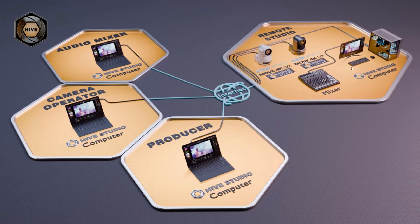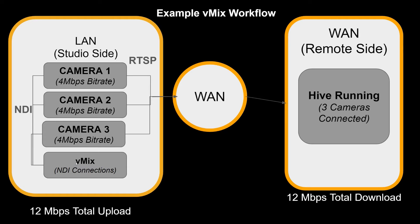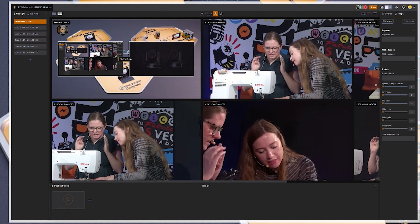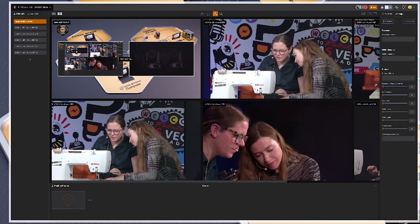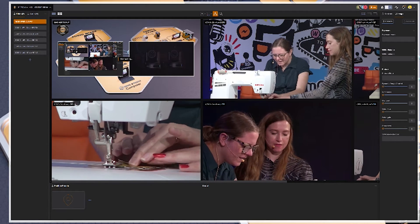They're going to be controlling the PTZ cameras — it looks like a studio setup with multiple people connecting to it. We've got multiple cameras, wireless microphones, vMix Social, PTZ Optics Hive for control, and we're streaming to YouTube. The interesting thing is that the cameras come into vMix with NDI, so the high-bitrate streams go locally to vMix for switching, recording, and streaming.